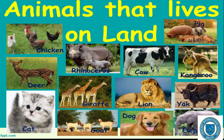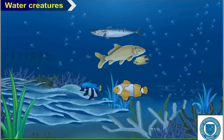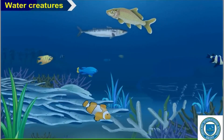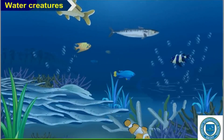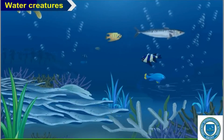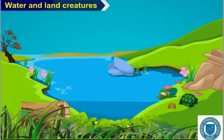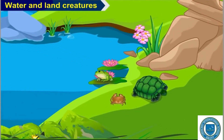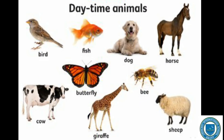Some animals live on land — for example: lion, elephant, dog, cat, and so on. Some animals live in water — for example: fish, whale, dolphin, and so on. Some animals live on land as well as in water — for example: frogs and crocodiles.